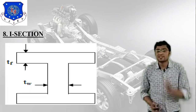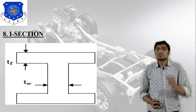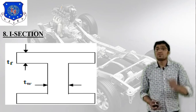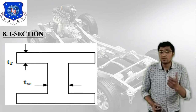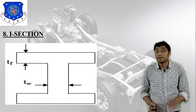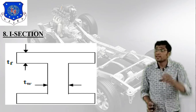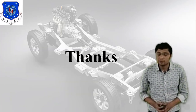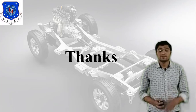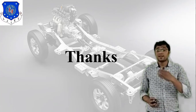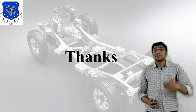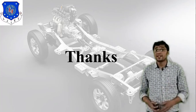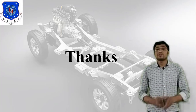The eighth and final type is the I section. You can find the I section in railway tracks. According to requirement, we can use any particular section. In this session we have completed chassis frame sections. In the next session we will discuss a new chapter related to car models. Thank you.